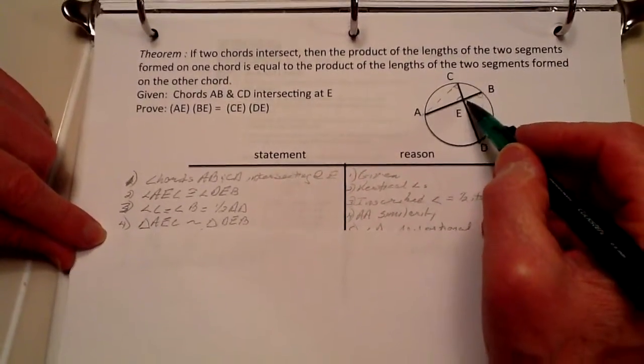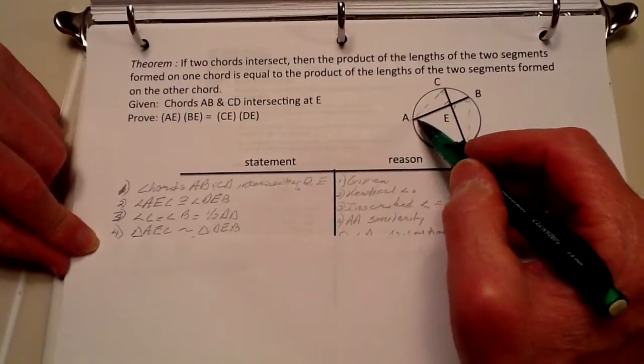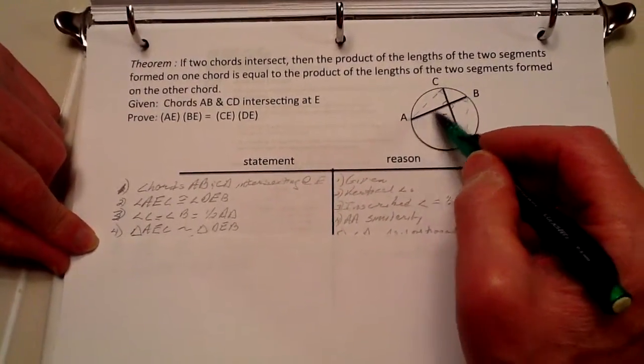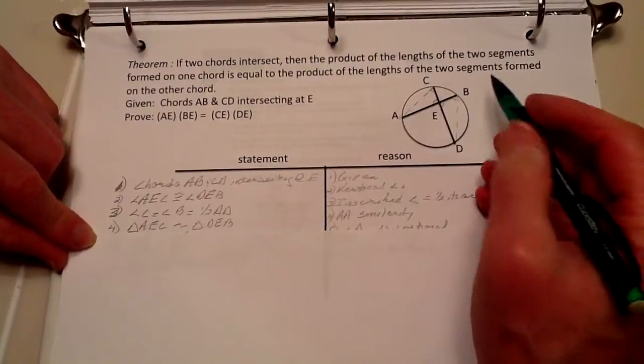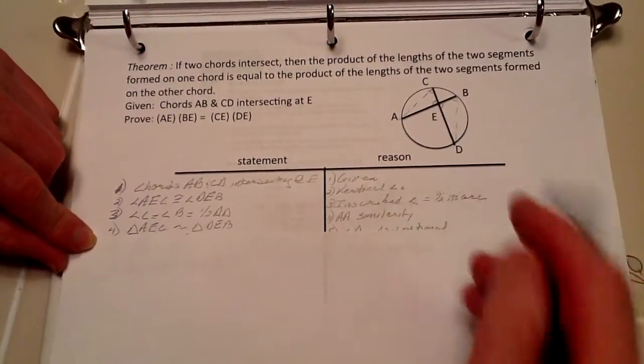Now we've got two angles that we have already found that are congruent, and therefore triangle AEC is similar to triangle DEB because of angle-angle similarity.